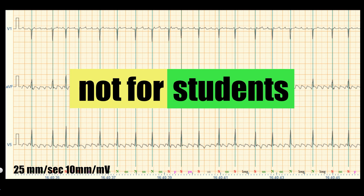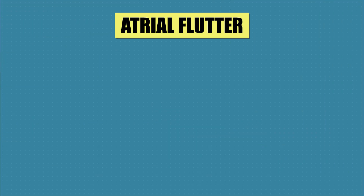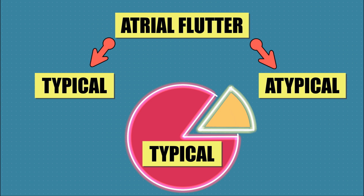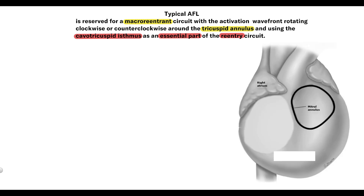Now for a section for ECG nerds — mostly for future cardiologists or for showing off. Atrial flutter can be typical or atypical; in most cases it is typical. Typical atrial flutter means a macro reentrant circuit in the right atrium, with the impulse rotating clockwise or counterclockwise around the tricuspid annulus, using the cavotricuspid isthmus as the essential part of the reentry circuit. This exact impulse movement can be seen on ECG.